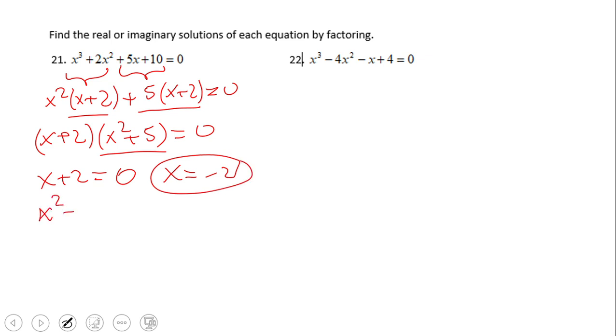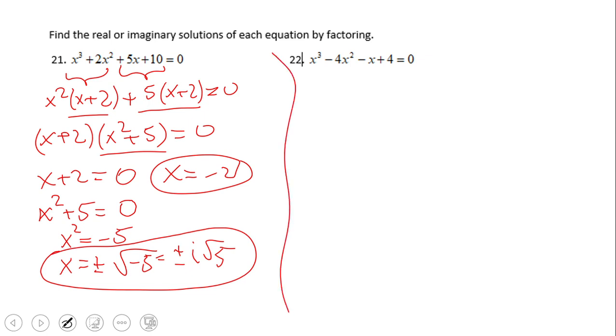And also x squared plus 5 equals 0, right? And this one, the easiest way I think is to subtract 5 and then take square root. Don't forget to put plus and minus, and simplify that as plus or minus i square root of 5. So these are the solutions for number 21 - one real, two imaginary now.